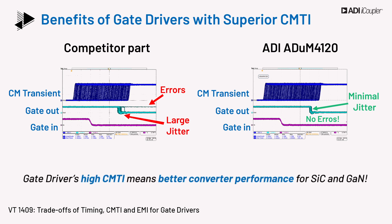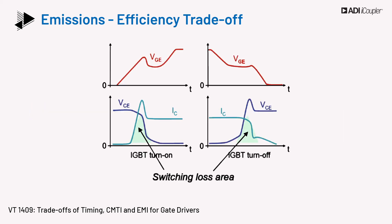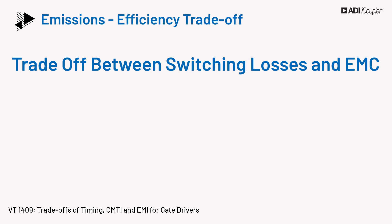A gate driver's high CMTI means better converter performance for SiC and GaN. Another important factor affecting system performance is electromagnetic compatibility, EMC, and measures are taken at the design level to minimize emissions. The techniques employed may include frequency spread spectrum and transformer coil structure and placement. Radiated emissions are also caused by the harmonics of the switching frequency in the converter. Switching frequency affects semiconductor switching losses as well, and the switching loss is also dependent on the switching transitions themselves. At the application level, there are ways to affect the radiated emissions while performing a trade-off between switching losses and emissions. Various operating conditions pose different issues.